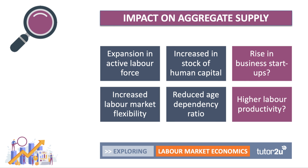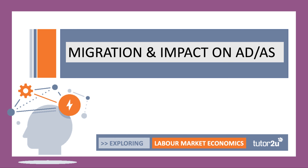Aggregate supply in the long term can go up if the average quality of migrants is high, both in terms of age, experience, qualifications and talents. It can sometimes lift labour productivity and that can have an impact on per capita incomes. So there are some thoughts on the impact of migration on both the demand and supply side of the economy.